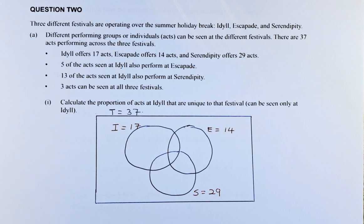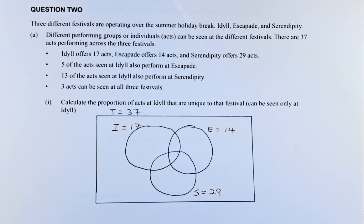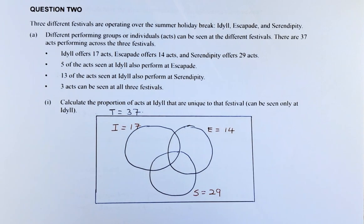This is a Venn diagram. So we shall read the question. Three different festivals are operating over the summer holidays: Idyll, Escapade and Serendipity. Different performing groups or individual acts can be seen at the different festivals. There are altogether 37 acts performing across three festivals, so the total is 37.